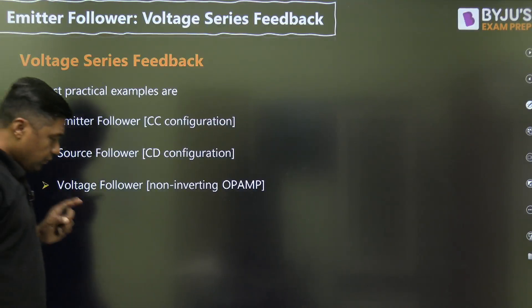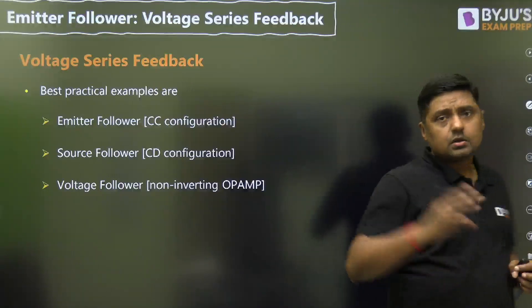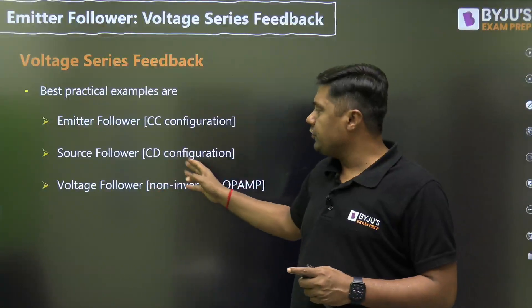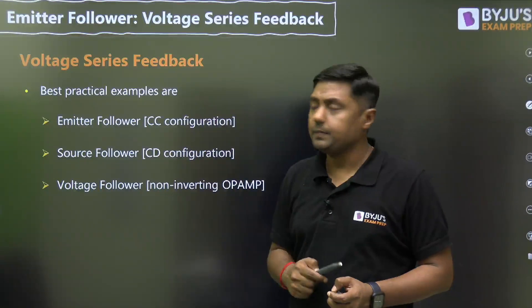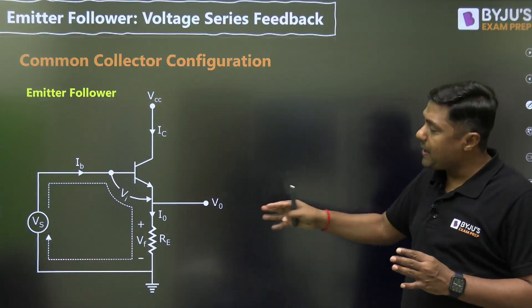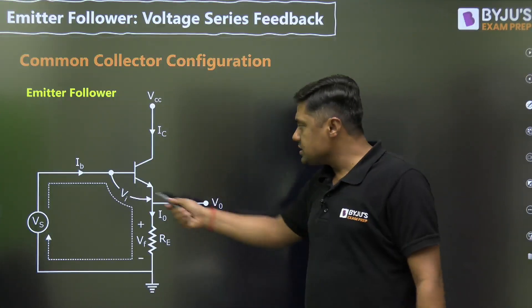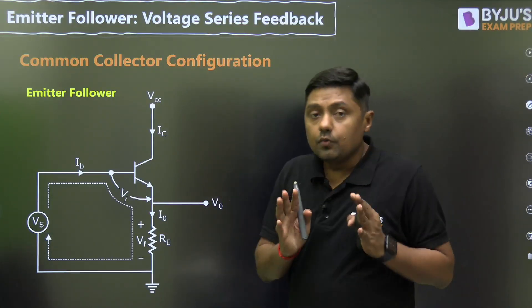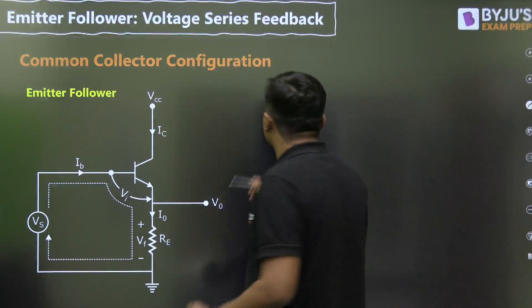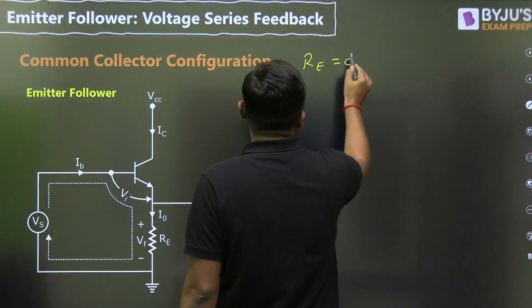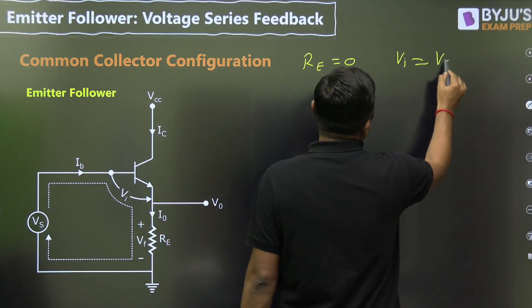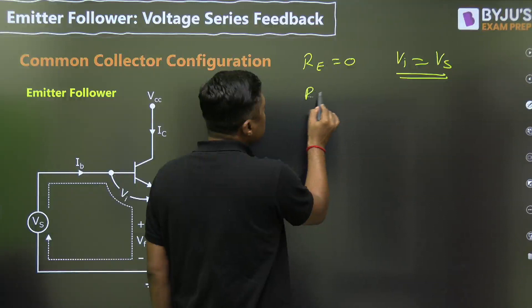Examples of voltage series feedback include: emitter follower (common collector configuration), source follower (common drain configuration), and the voltage follower non-inverting operational amplifier. In the emitter follower circuit, if RE is zero, there is no feedback and VI equals VS.